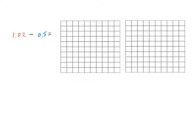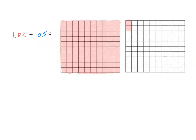Let's look at one final example of modeling subtraction of decimals using decimal squares. I have one and two hundredths minus five tenths. I'm going to start by modeling the number I have — one and two hundredths. So I need to shade in one full decimal square, plus two more hundredths: one, two. Now I'm ready to take away five tenths: one tenth, two, three, four, and five tenths that I have now subtracted.